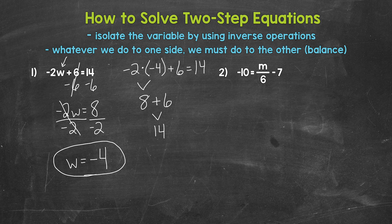Let's move on to number 2, where we have negative 10 on the left side of the equation equals m divided by 6 minus 7 on the right side. So what divided by 6 minus 7 equals negative 10? We need to isolate the variable m.